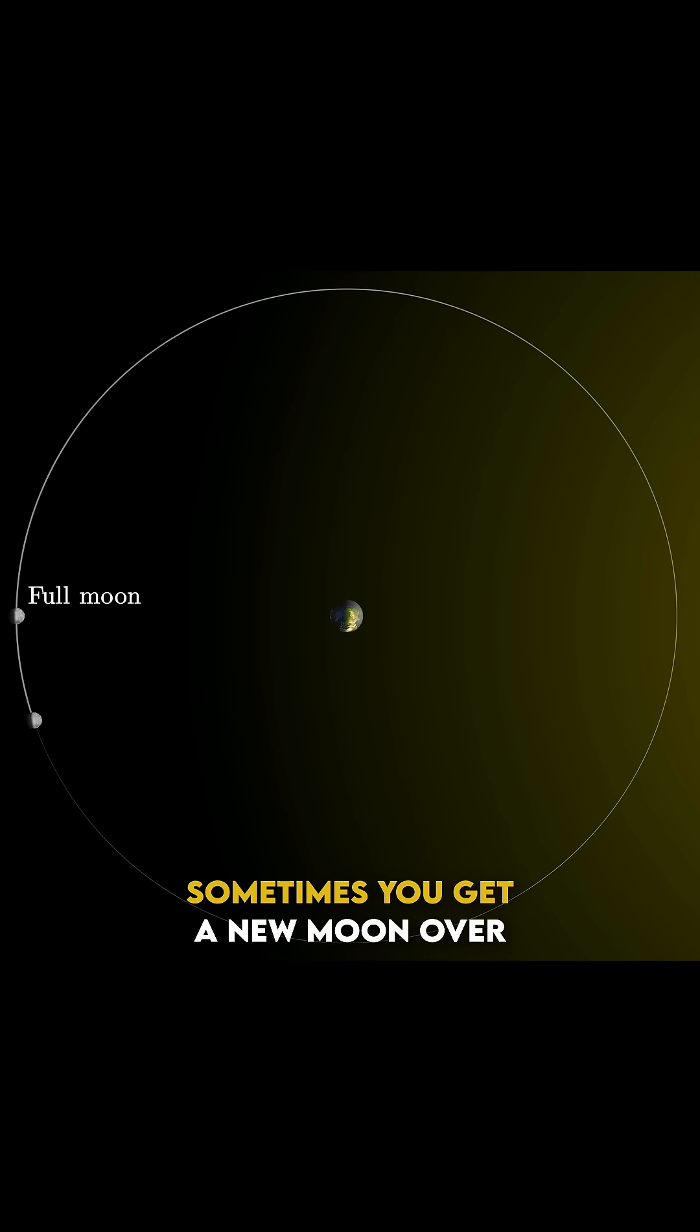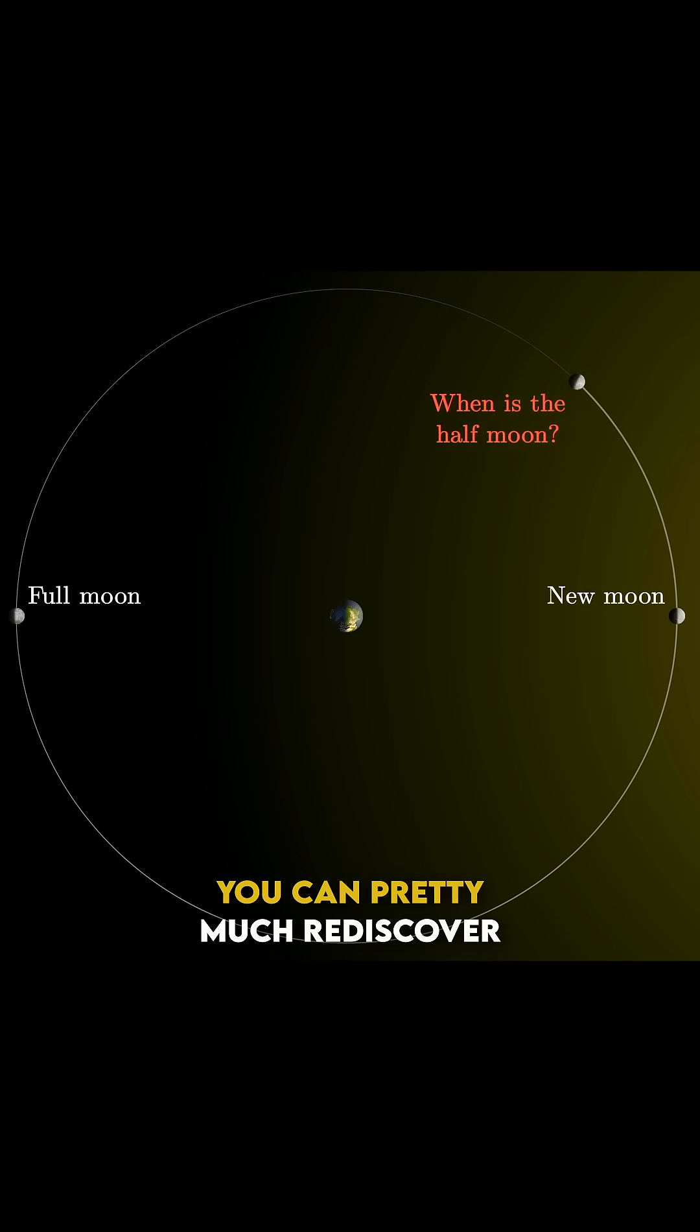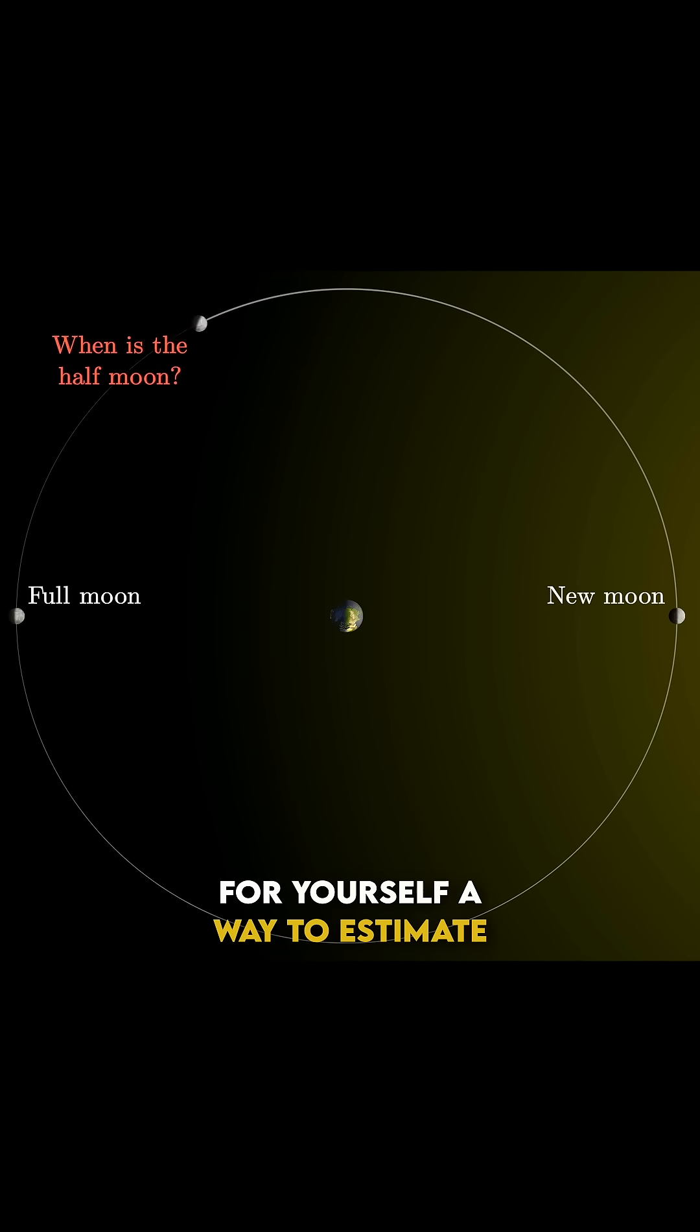Sometimes you get a full moon, sometimes you get a new moon over here, and sometimes you get a half moon. You can pretty much rediscover for yourself a way to estimate the distance to the sun by asking when exactly a half moon occurs.